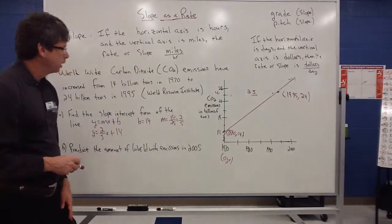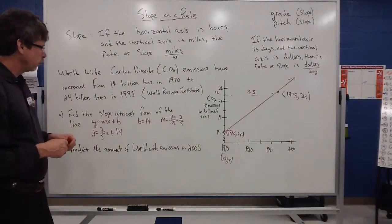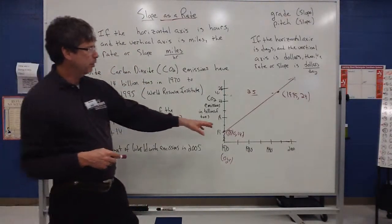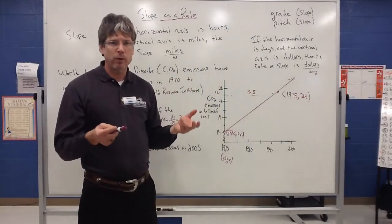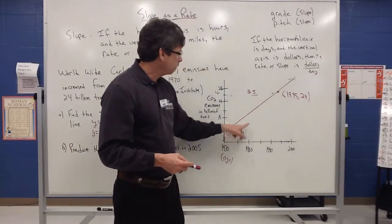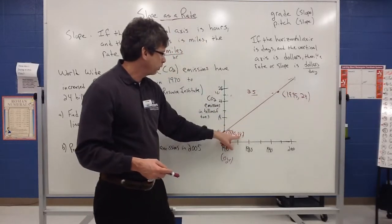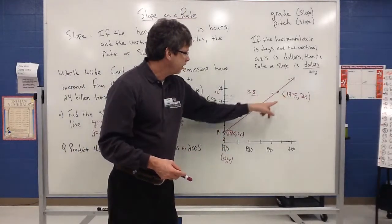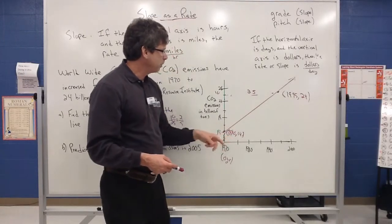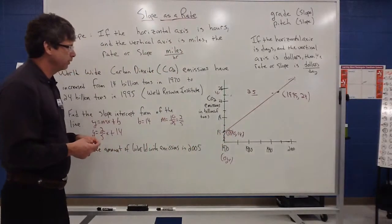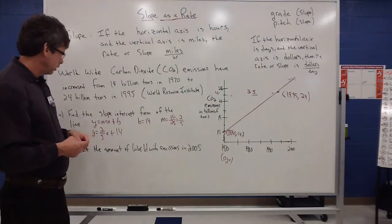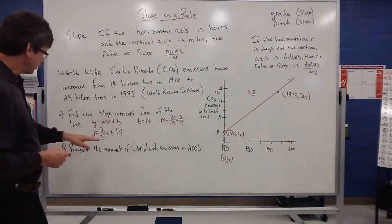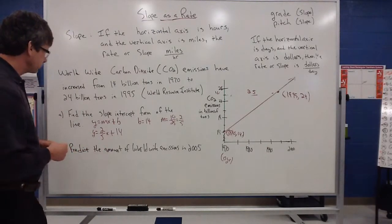So I can write this as y equals then 2 fifths x plus 14. That could be my linear equation for this. So there is our slope intercept form of our equation. And again, I could find slope by even using slope formula if I wanted to.